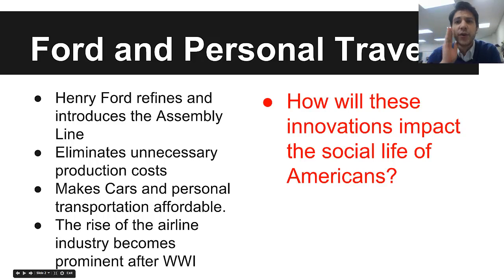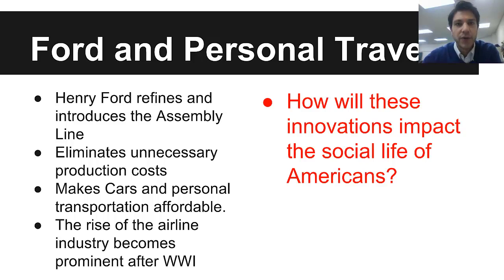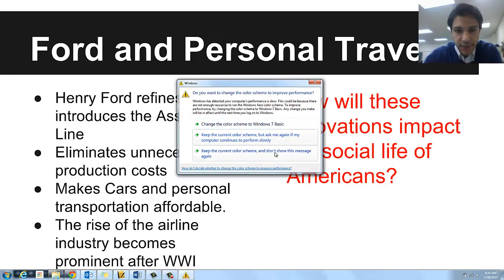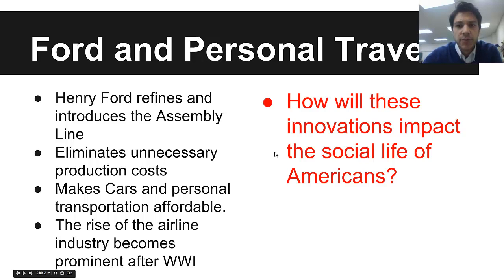A couple things come out during this time that really affect how people live. Henry Ford perfects — or refines — the assembly line. It eliminates unnecessary production costs, keeps everything in line and on a strict schedule. With this, a lot of other industries take notice: the airline industry booms, cars boom, factories boom, everything is building and everything is cheap. And when things are cheap to build, things are cheap to buy. Think about this question: how will these innovations impact the social life of Americans? What can they do now with cheaper travel?